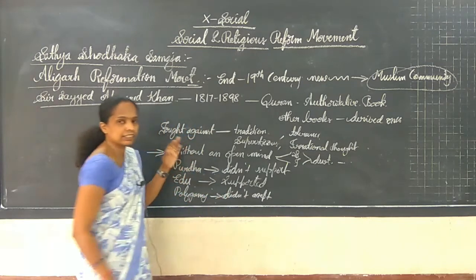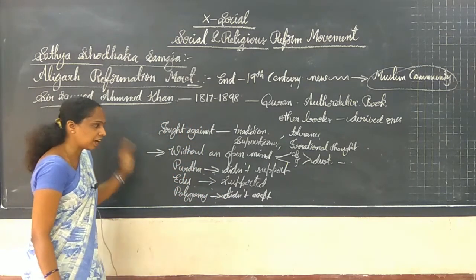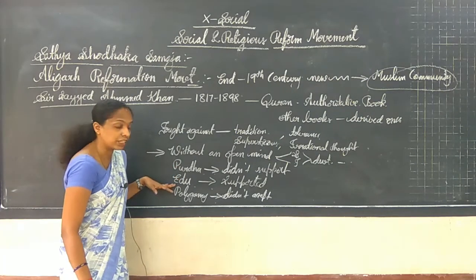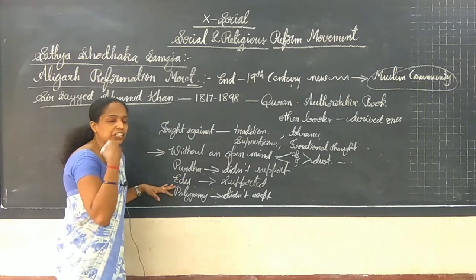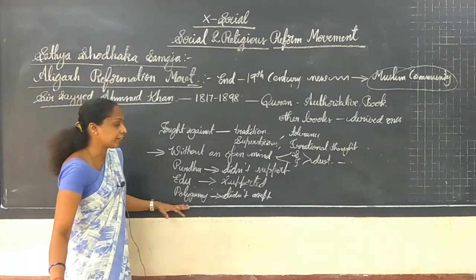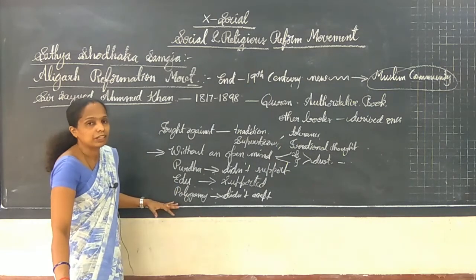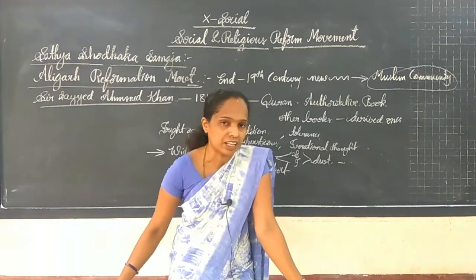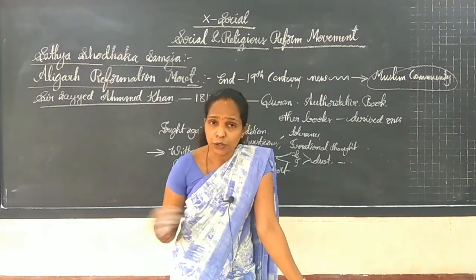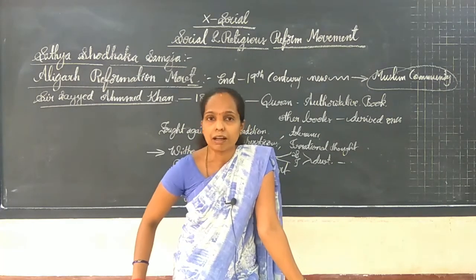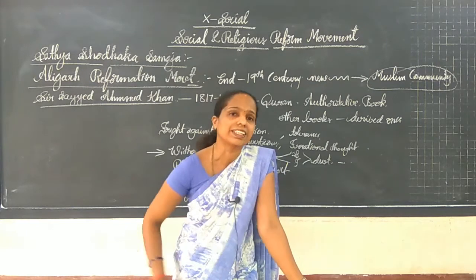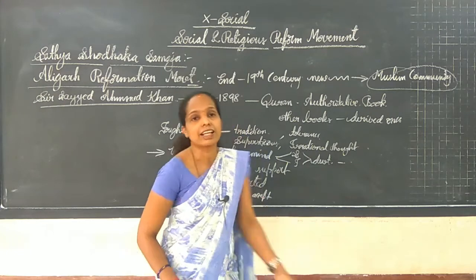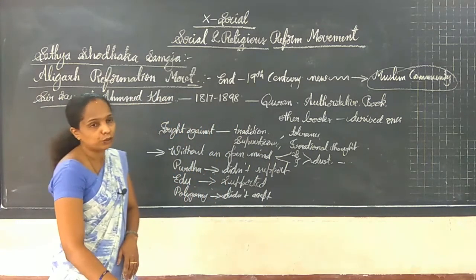So I hope you are understanding. Syed Ahmad Khan did not support the purdah system for the Muslim community, and he supported education for Muslim girls, and he did not accept the polygamy system. These are the main aspects. In order to implement these aspects into reality, he found it important to establish a Mohammedan Anglo-Oriental College.